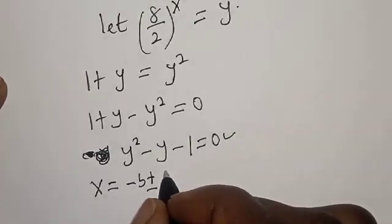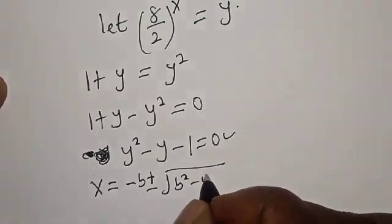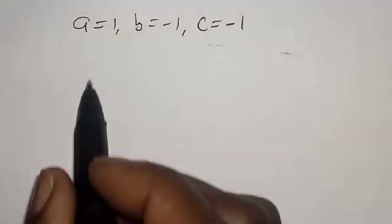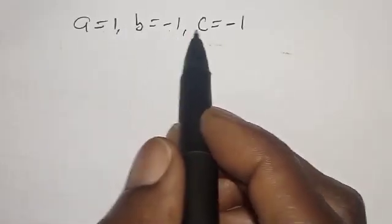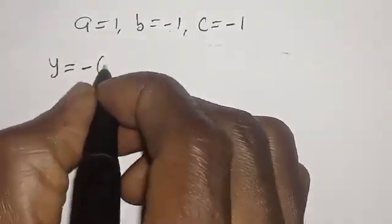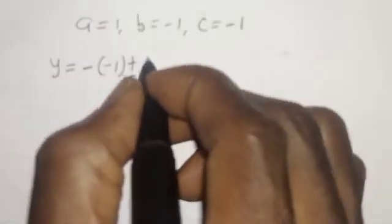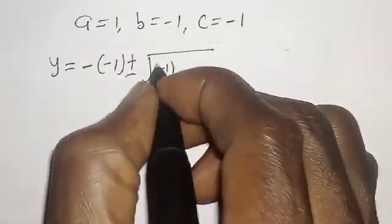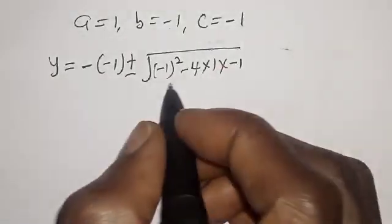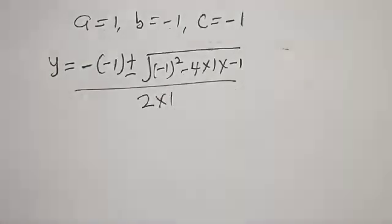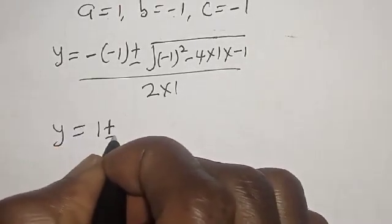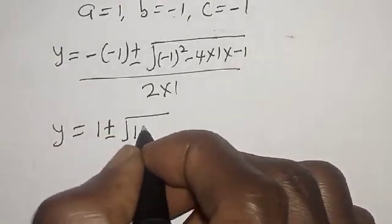Let's solve this using the quadratic formula: y is equal to minus b plus or minus square root of b squared minus 4ac, over 2a. Here a equals 1, b equals minus 1, and c equals minus 1. Then y equals minus(minus 1) plus or minus square root of (minus 1) squared minus 4 times 1 times (minus 1), over 2 times 1.